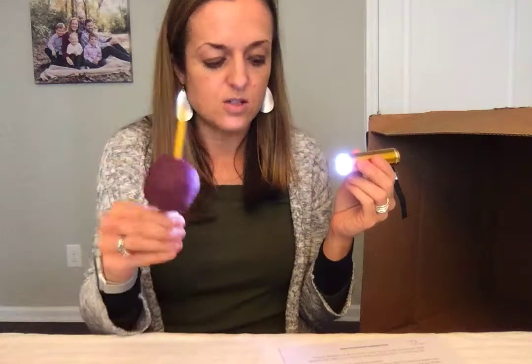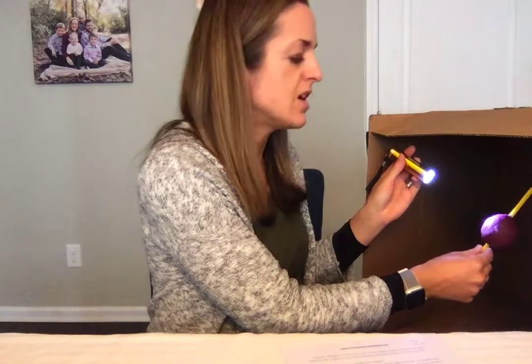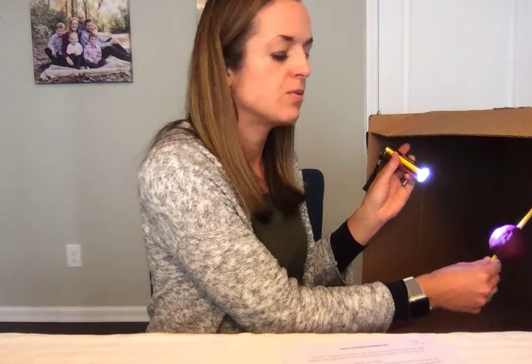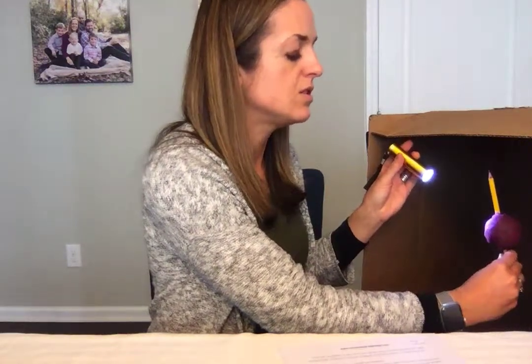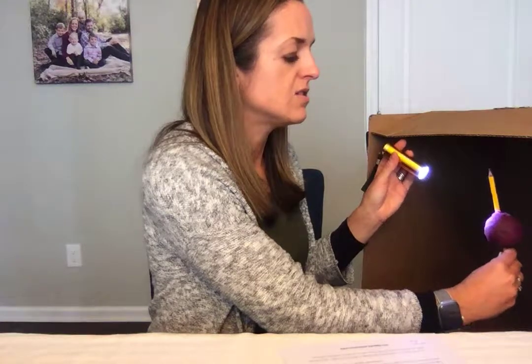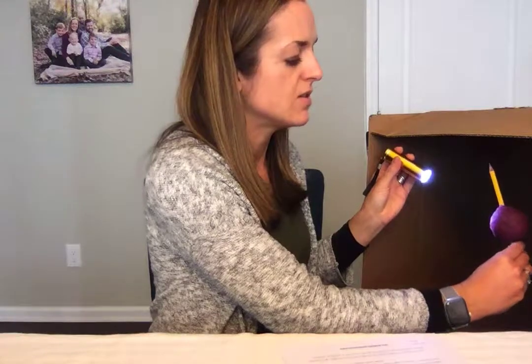Then we're going to talk about the seasons by introducing the Sun as a flashlight. You can be the Sun and pass off the Earth to one of your students to rotate while you hold the flashlight up to it. I have a box here and we're going to have you in dark rooms on this day. You're talking about how because the Earth is tilted, where the Sun shines is daytime, and the dark side is nighttime — and that tilt is what gives us the seasons.